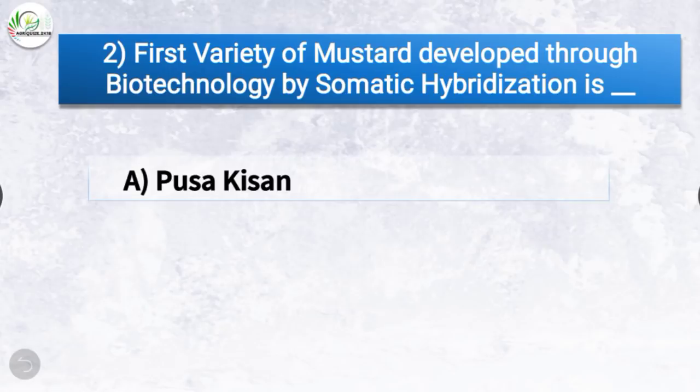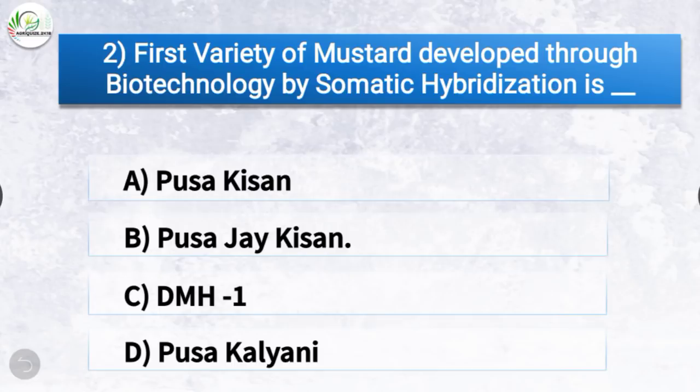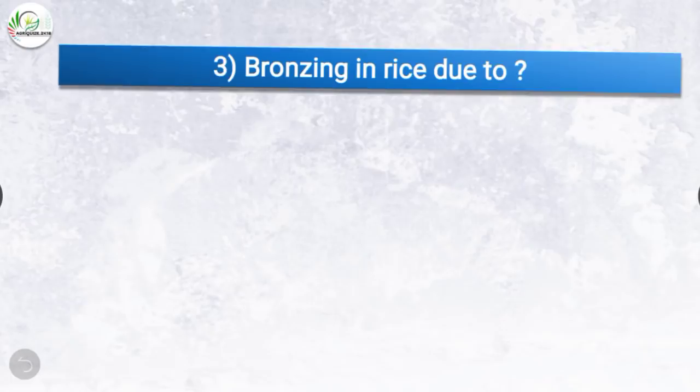Question number two: First variety of mustard developed through biotechnology by somatic hybridization. The correct answer is option B, Pusa Jay Kisan. The first variety of mustard developed through biotechnology by somatic hybridization is Pusa Jay Kisan.